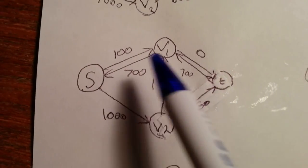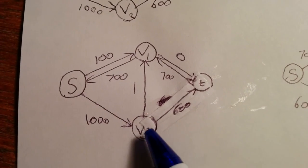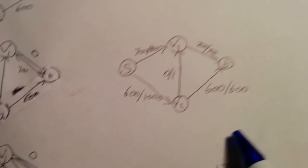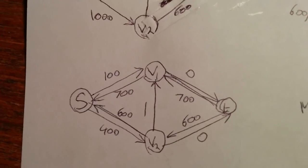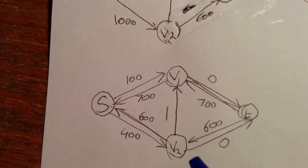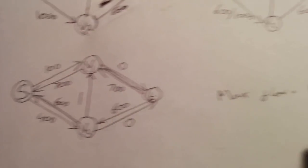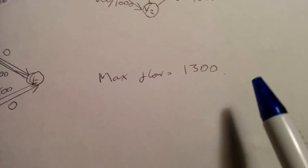And then we move on. We've updated the graph, and we can push a value of 600 from S to V2 and then V2 to T. So again, I've updated the residual network. And then we finish off, and we see that we cannot push any more from V1 to T and V2 to T. So the max flow in the end is equal to 600 plus 700, which equals 1,300.